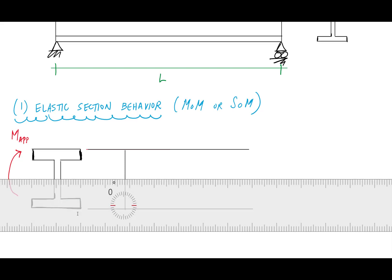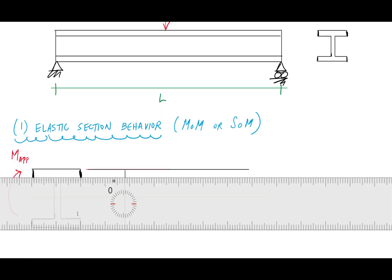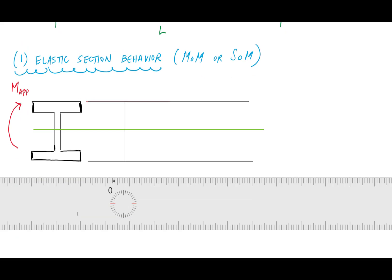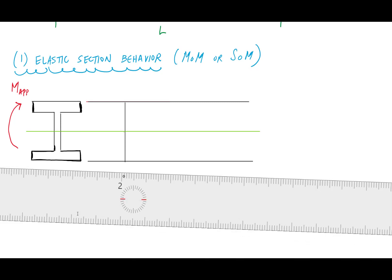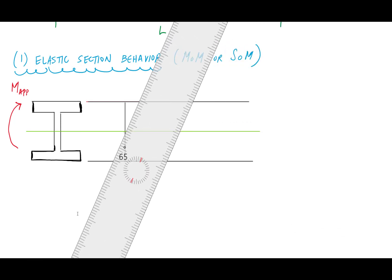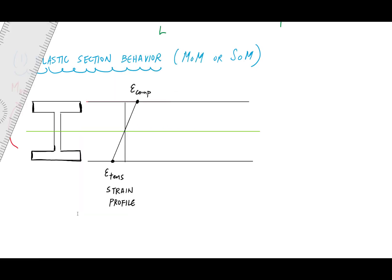When the material remains linear elastic, for this symmetrical cross section, the neutral axis is in the middle at the geometric centroid. We know from mechanics of materials that the strain varies linearly, with compression at the top and tension at the bottom. Because everything is linear, the compressive strain is less than the yield strain and the tensile strain is less than the yield strain.